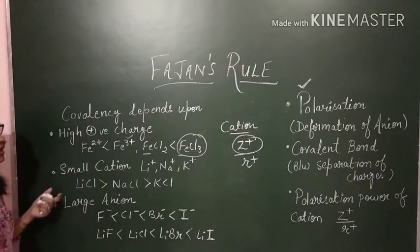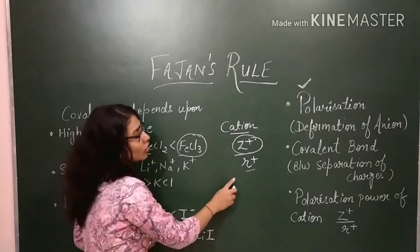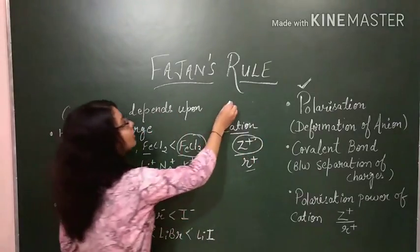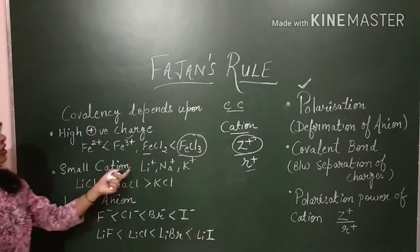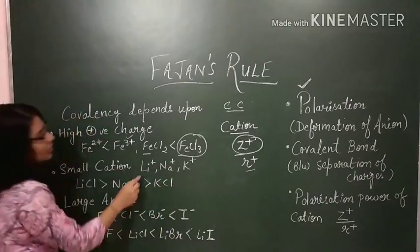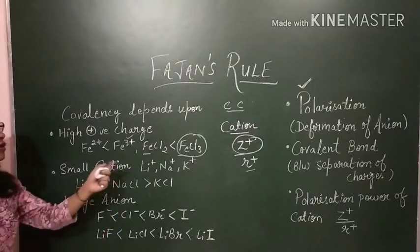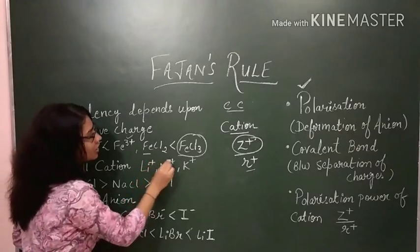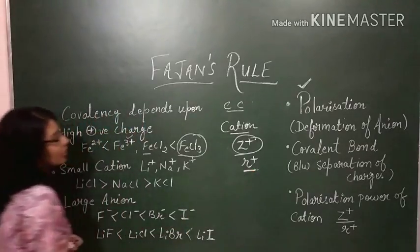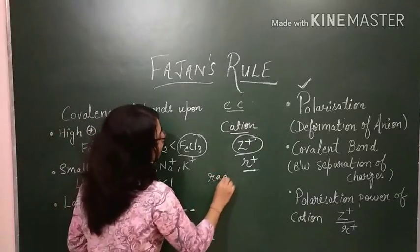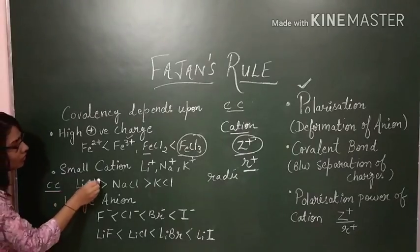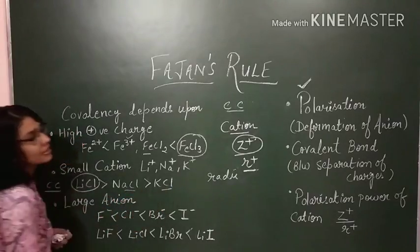The second factor is small cation size. If the cation radius is small, the polarization power is more, leading to more polarization and more covalent character. Comparing Li⁺, Na⁺, and K⁺ — since they have the same charge, we look at their radii. Li⁺ is the smallest, so LiCl has more covalent character compared to NaCl and KCl.